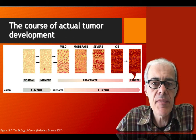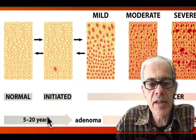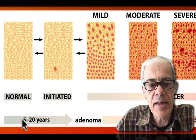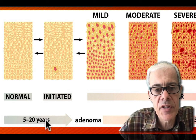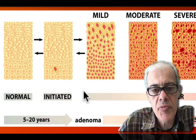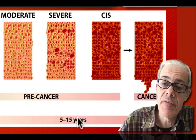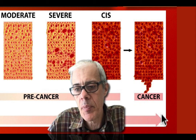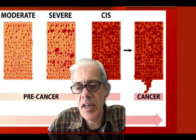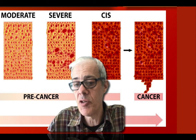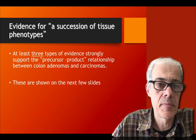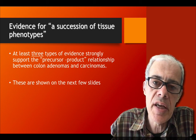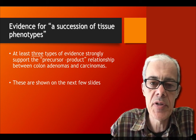Here we have the course of an actual tumor, now with a timeline added. From normal cells, there is a period of time leading to pre-cancerous states, and then a further period leading to a cancerous state. Typically, cancers of this type are seen in an aged population. Here are three pieces of evidence that strongly represent this succession of phenotypes idea, also referred to as a precursor-product relationship.